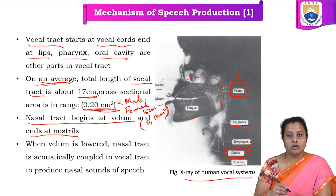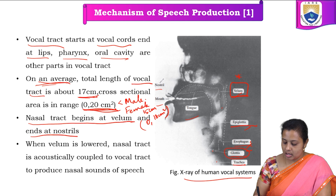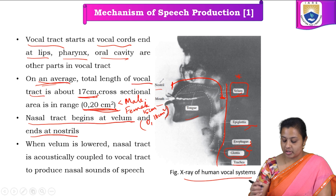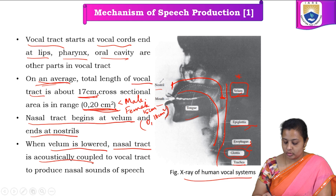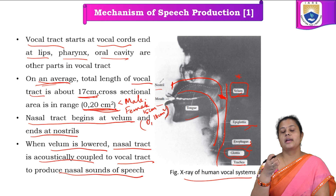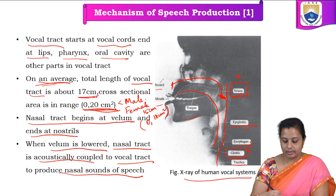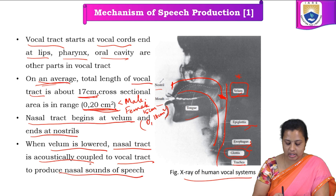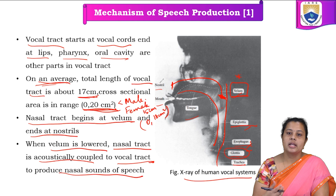The nasal tract begins at the valium and ends at the nostrils. When the valium is lowered, the nasal tract is acoustically coupled to the vocal tract to produce the nasal sounds of speech. The air pressure and air velocity are acoustically coupled to the vocal tract — similar to a coupling system between inductors — and that is how we are able to produce nasal sounds.